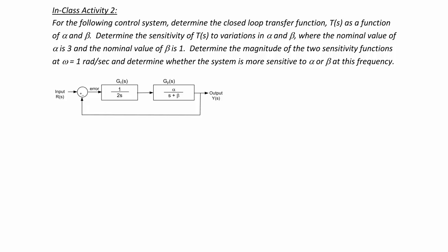For the following control system, determine the closed loop transfer function T(S) as a function of alpha and beta, and determine the sensitivity of T(S) to variations in alpha and beta, where the nominal value of alpha is 3 and the nominal value of beta is 1. Determine the magnitude of the two sensitivity functions at omega equal to 1 radian per second and determine whether the system is more sensitive to alpha or beta at this frequency.